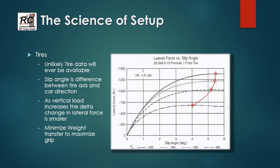Now let's talk about some characteristics of tires. It's very unlikely we'll ever have tire data, because you need tire data for every surface you run on, different camber angles, every tire compound, insert, and so on — it's an absolutely staggering amount of data to generate these curves. What I've got shown here is an old Formula One tire, and there are some important things we can learn just by looking at this performance curve.